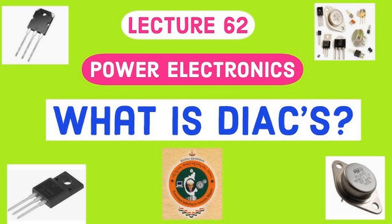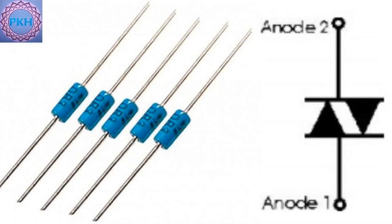The principles of operation of a DIAC, diode for alternating current, revolve around its ability to conduct current bidirectionally when the applied voltage exceeds a certain threshold, known as the breakdown voltage. Below are the key principles that govern how a DIAC operates. Principle 1: bidirectional conductivity.